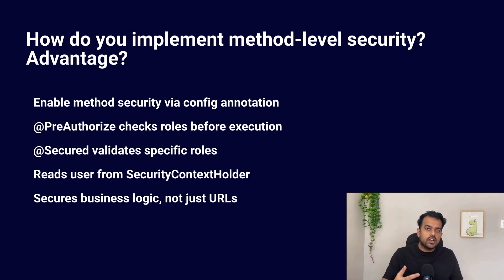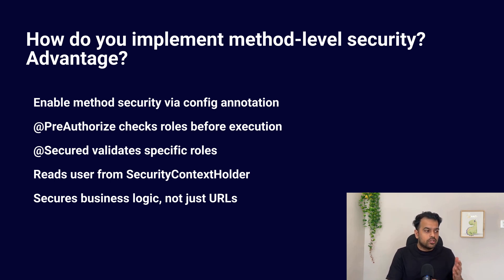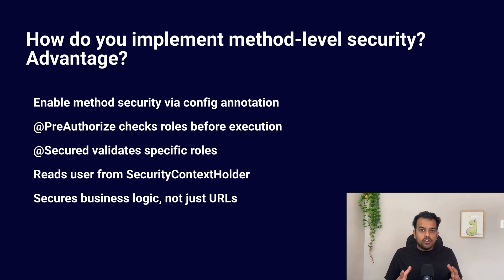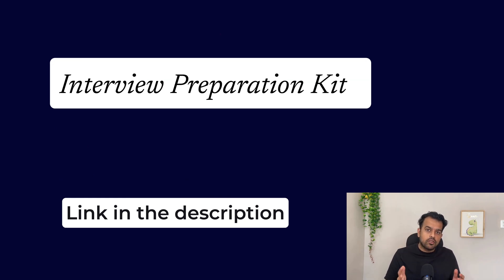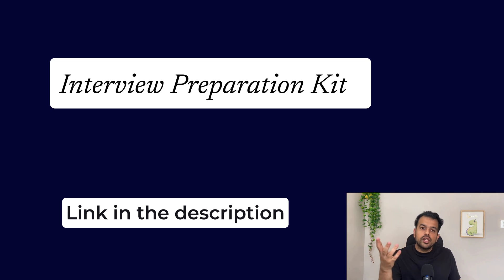Wrapping up — today we covered a real part of authentication and authorization: filter chain, token and password safety, and Spring Security. In most interviews, what matters is not the full syllabus but clarity of thought. Questions like OAuth2.0 flow, token validation, filter chain, and method security are the ones that decide the outcome of your interview. That's it for this video — see you in the next one.